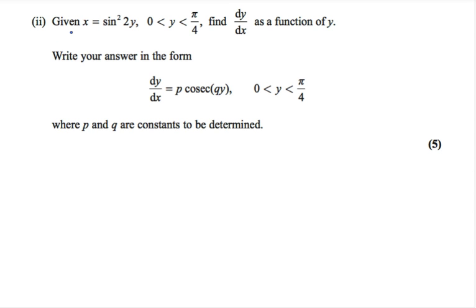Part 2 says given x equals sine squared 2y, y between 0 and pi over 4, find dy dx as a function of y. Write your answer in the form dy dx equals p cosec qy, where p and q are constants to be determined.